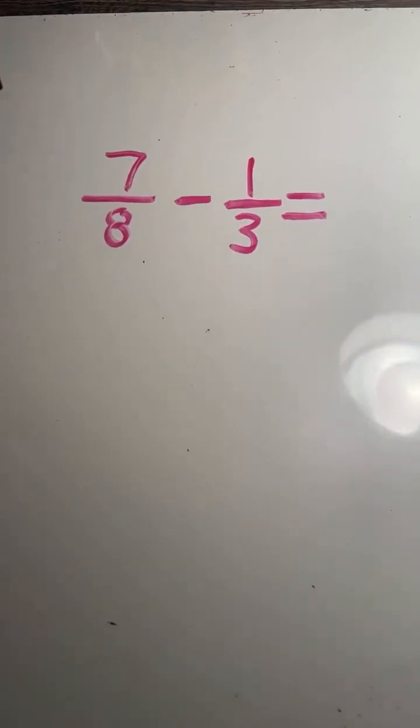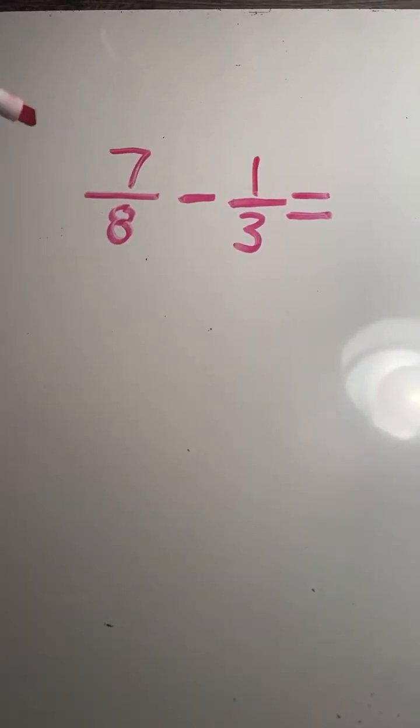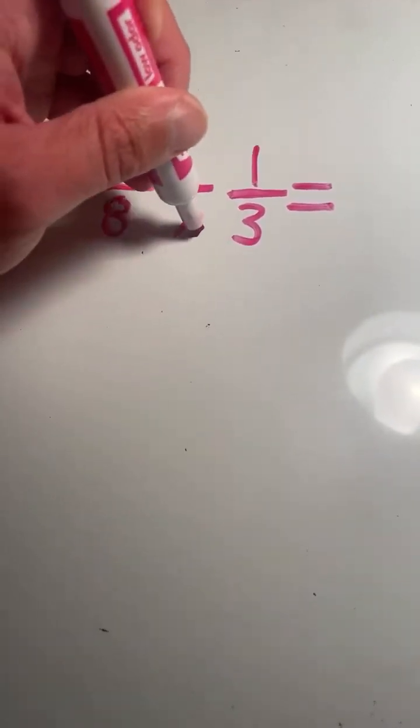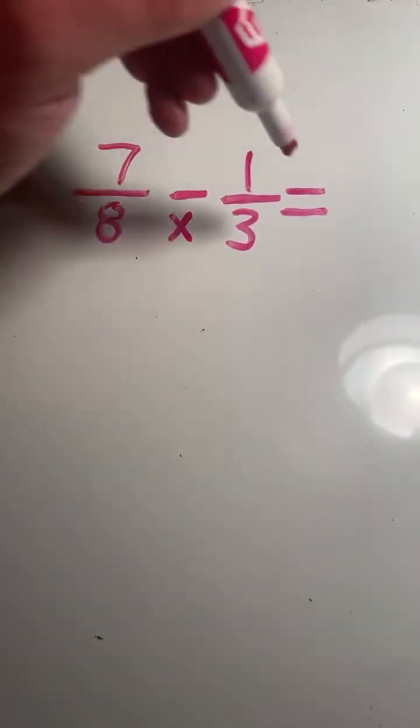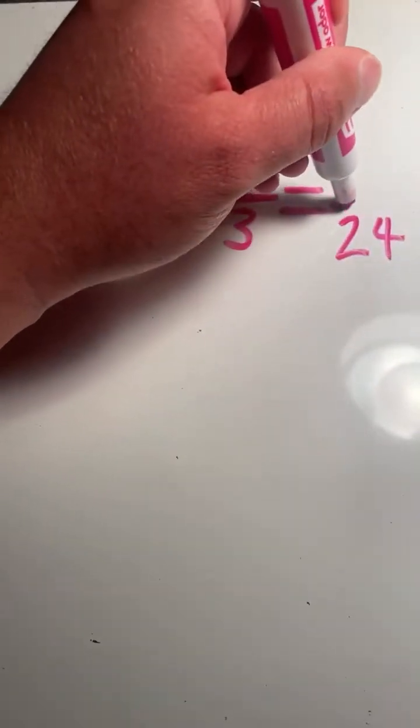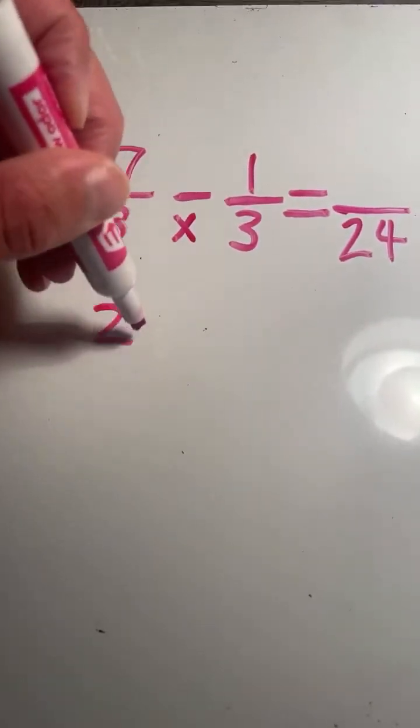Step one, we've got to find a common denominator and we do that by multiplying our two different denominators. So we're going to multiply 8 times 3. 8 times 3 equals 24. So 24 is our common denominator.